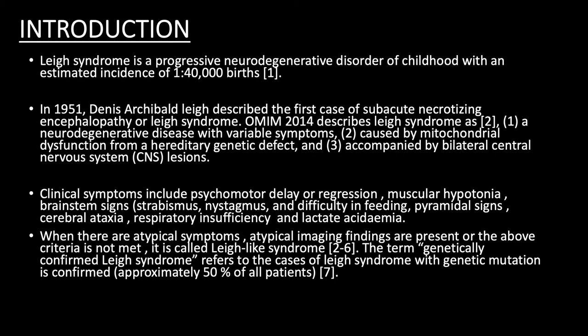Leigh Syndrome is a rare degenerative disease with incidence of 1 in 40,000. It is defined as a neurodegenerative disease with variable symptoms, caused by mitochondrial dysfunction from genetic defects accompanied by CNS symptoms. Clinical symptoms include psychomotor delay or regression, hypotonia, strabismus, nystagmus, and feeding difficulty. There can also be cerebellar ataxia and lactic acidemia.